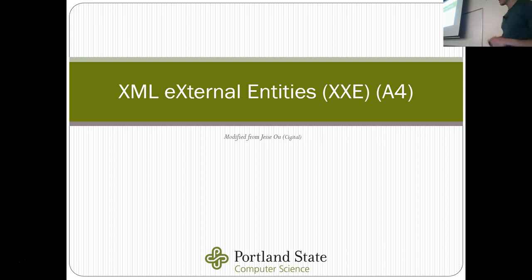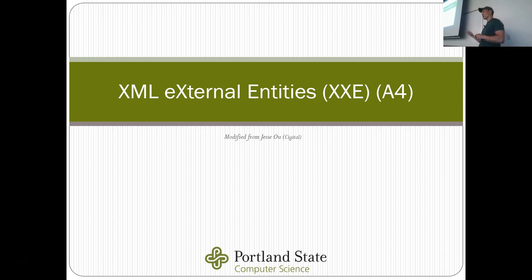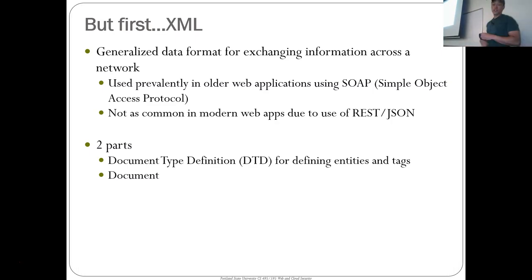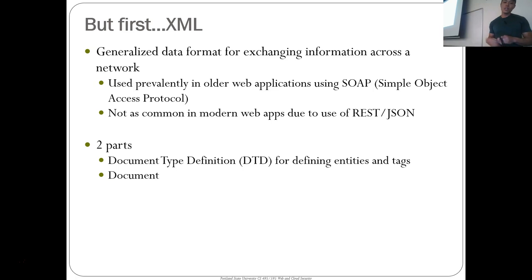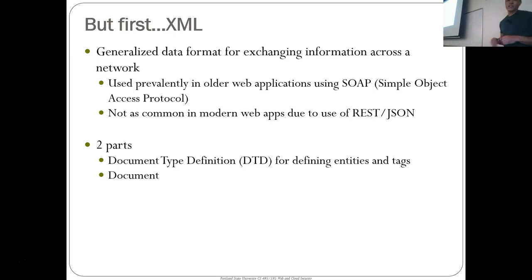The next thing I want to talk about, which did make the OWASP top 10, is the XML external entities vulnerability. This stuff is really old school, and because we have a lot of old school server stuff out there, that's why it's in the top 10. If you get hired by a company with a lot of legacy Java and Java server pages, you might run into this vulnerability.